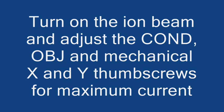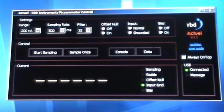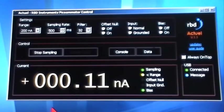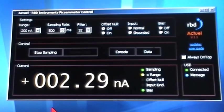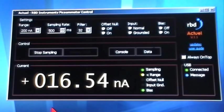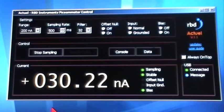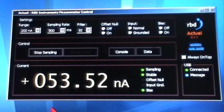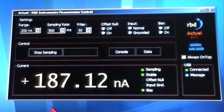So, we turn the ion beam on, we're going to adjust the condenser, objective, and mechanical on the ion source to maximize the current into the Faraday cup. And we turn it on, now I'm moving the mechanical X a little bit and Y a little bit to try to maximize the counts. Adjusting the condenser and the objective.